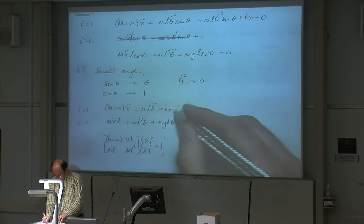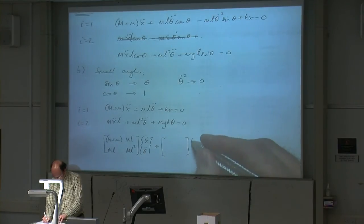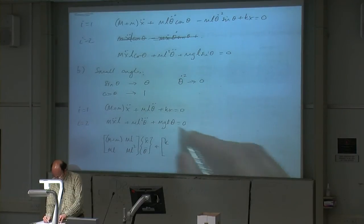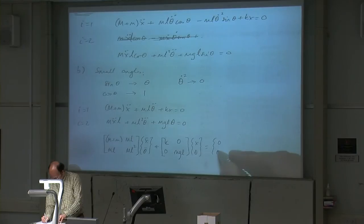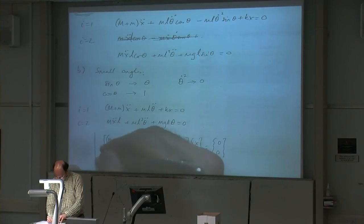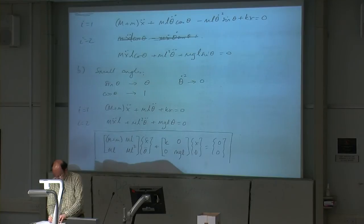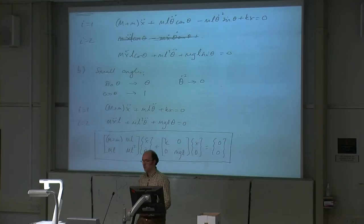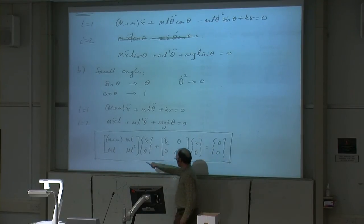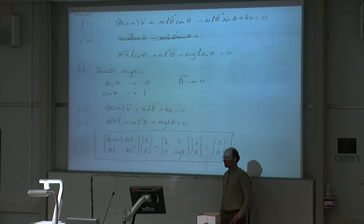Plus, and then we've got the stiffnesses. We've got K times X, so if this is X and this is θ, we've got K, and down here we've got MGL. And here we've got 0 and 0. Making the assumption about small angles, you can reduce this problem to a linear system that you can write in matrix form, where you've got a mass matrix and a stiffness matrix. The mass matrix is multiplied by the acceleration, and the stiffness matrix is multiplied by the displacement. That equals 0, because there's no forcing function.